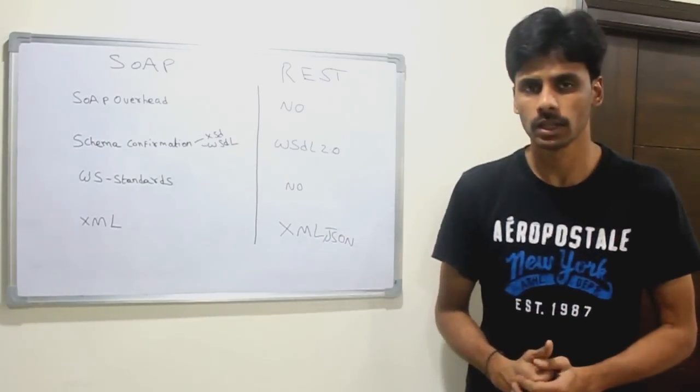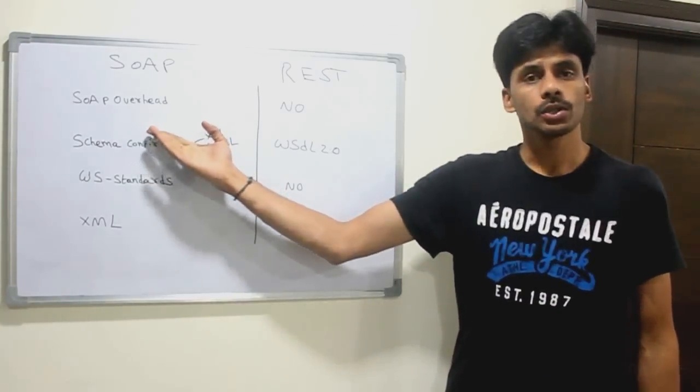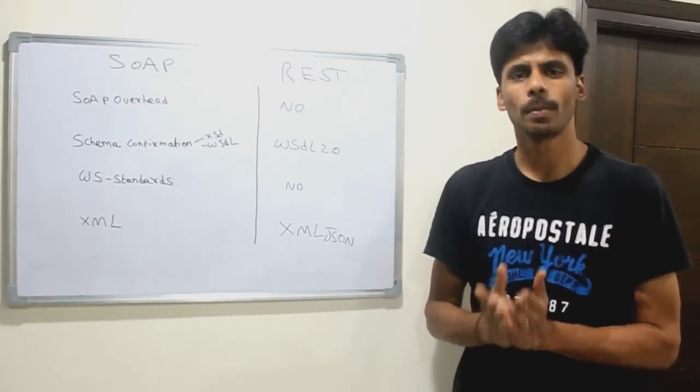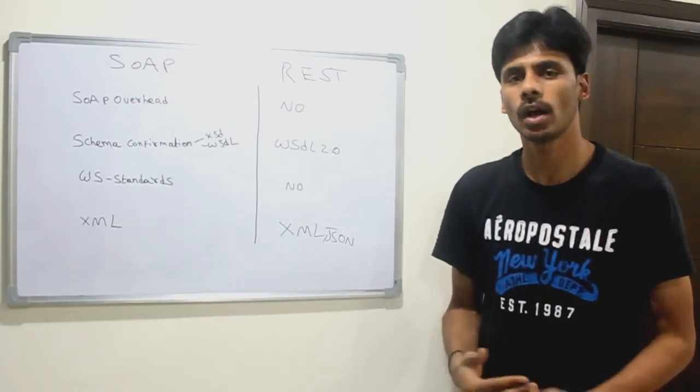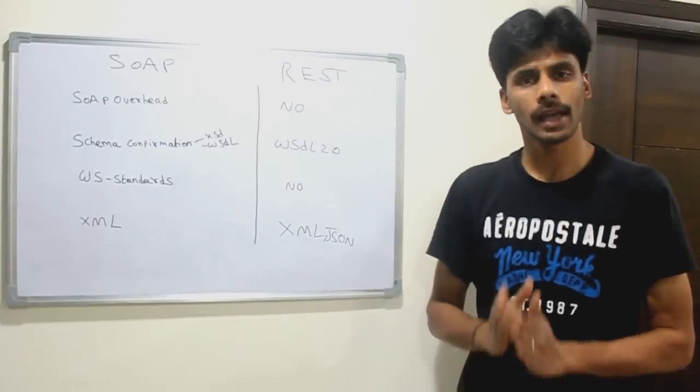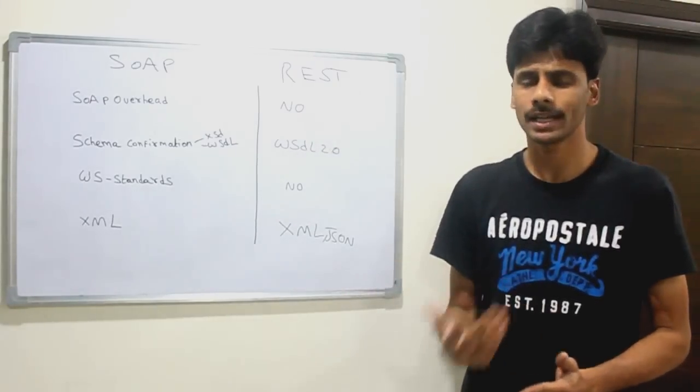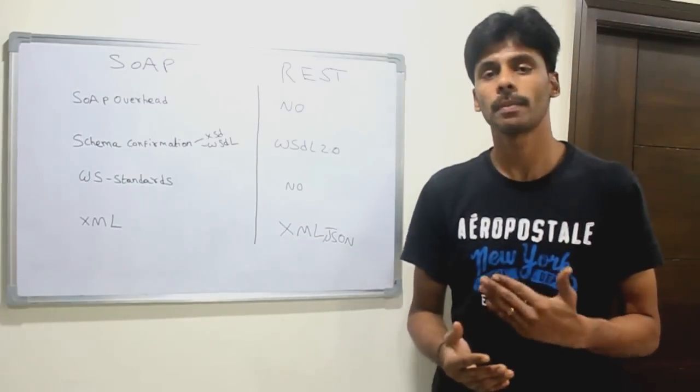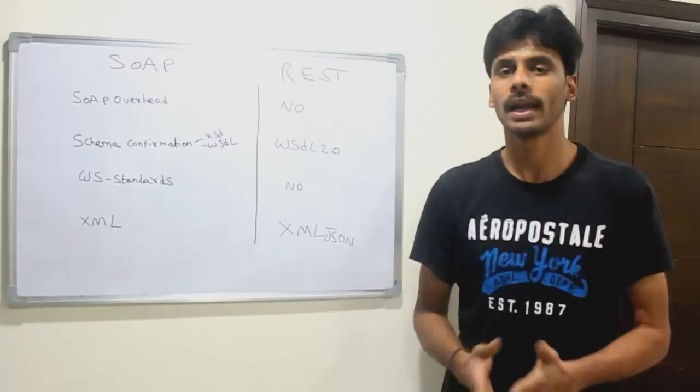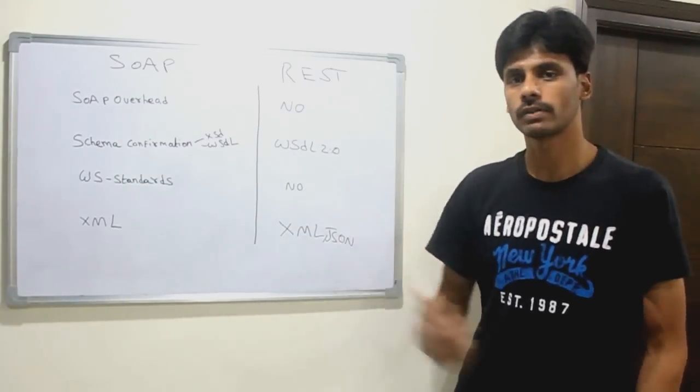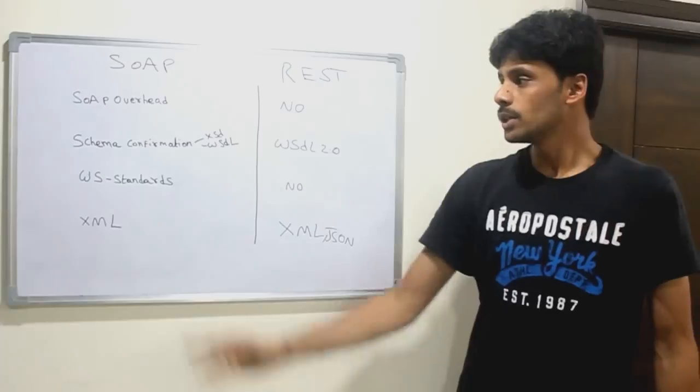In the SOAP-based approach, we have the SOAP overhead—we have the SOAP envelope, SOAP body, SOAP header, etc., which is an overhead along with the actual message payload. In case of RESTful, we only deal with the actual message that has to be exchanged, the actual XML message that should be exchanged.